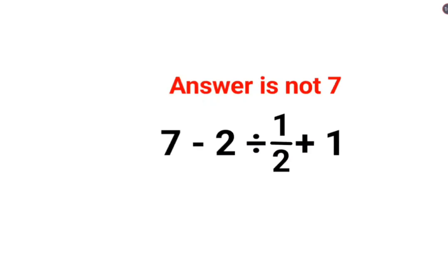Welcome everyone. So yes, a lot of people thought that the answer for this question is supposed to be just 7 because 2 divided by half, a lot of people thought that this can get cancelled. So 7 minus 1 plus 1, the answer is 7.